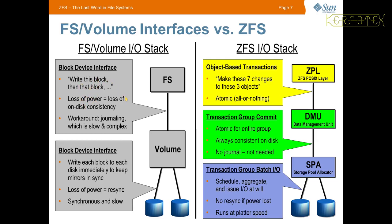In the ZFS IO stack, transactions are atomic — object-based transactions. The command is 'make these seven changes to these three objects' and it won't mark it as complete until it knows all changes are on disk, secured and safe. With the traditional method, if there's a power failure you don't know how much data has been written — ten blocks may have been allocated but only five written, leaving five blocks marked as allocated with no data. With ZFS, if there's a failure the changes would be rolled back as if the change had never been made. Therefore there's no journal needed because it's all or nothing.